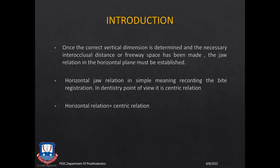Once the correct vertical dimension orientation relationship has been determined and established, and the necessary interocclusal distance of freeway space has been made, the jaw relationship in the horizontal plane can be commenced. Horizontal jaw relationship, in simple terms, is the recording of the bite registration. It is also known as Centric Relationship.